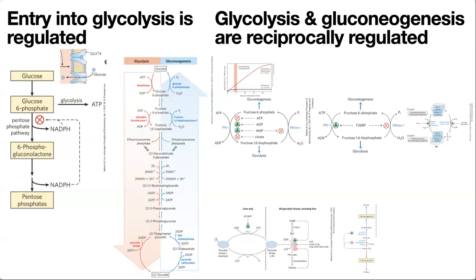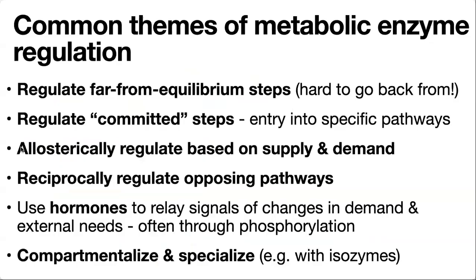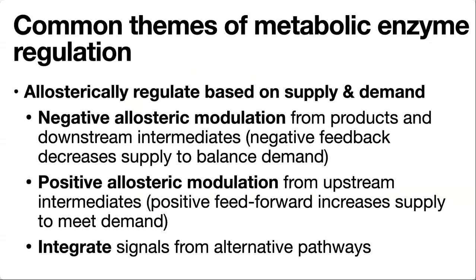How do we regulate these different enzymes? We regulate them with signals of supply and demand, often through allosteric regulation — using small molecules that are intermediates of the pathway to bind to and change the shape of the enzymes. For negative modulation, you decrease enzyme activity, often in response to buildup of products. If your supply is outpacing demand, you don't want to keep making products if you're not going to be using them. Those products can feed back to decrease supply and shift things to an alternative pathway.